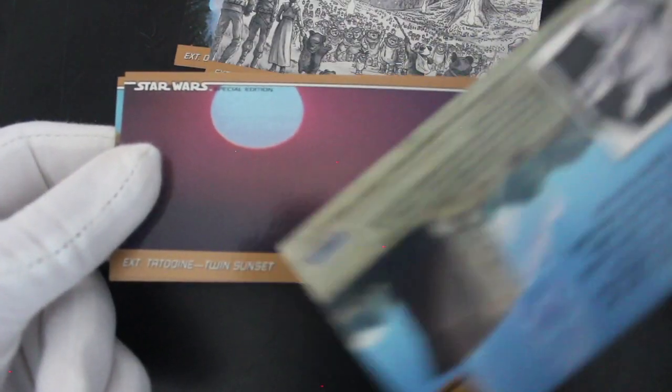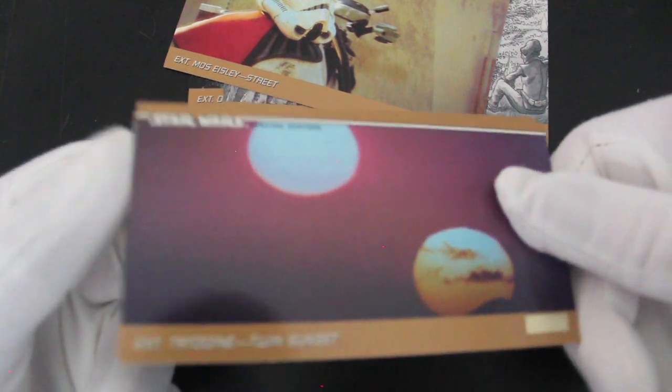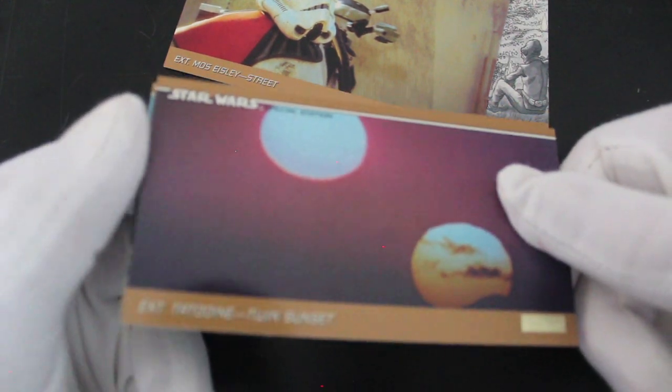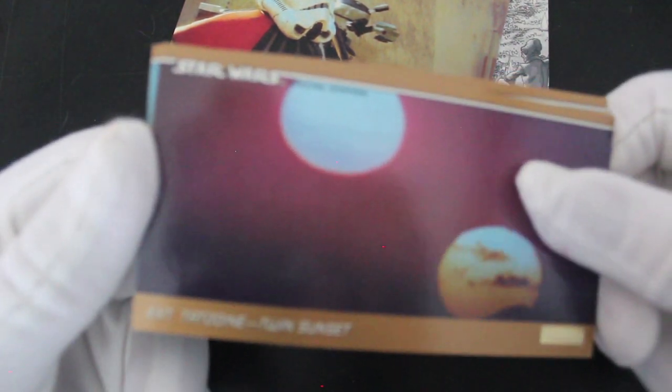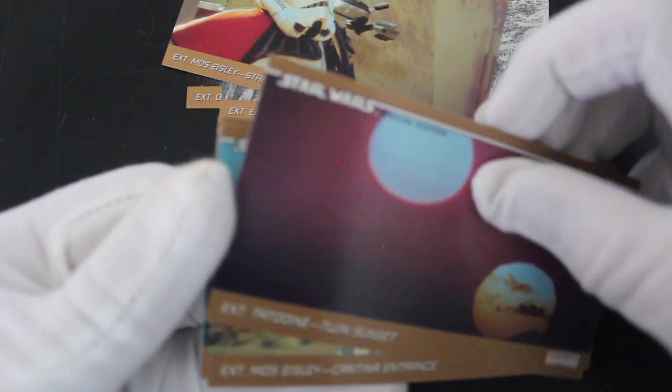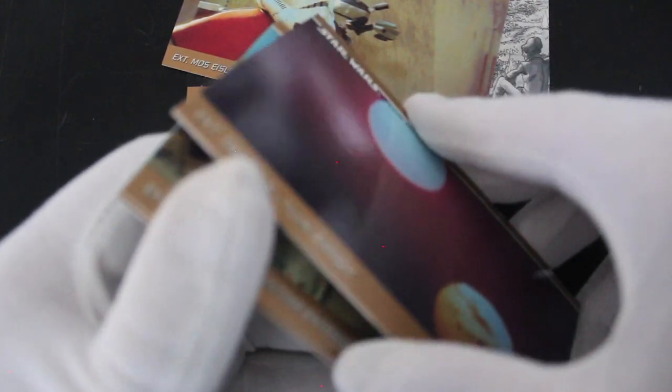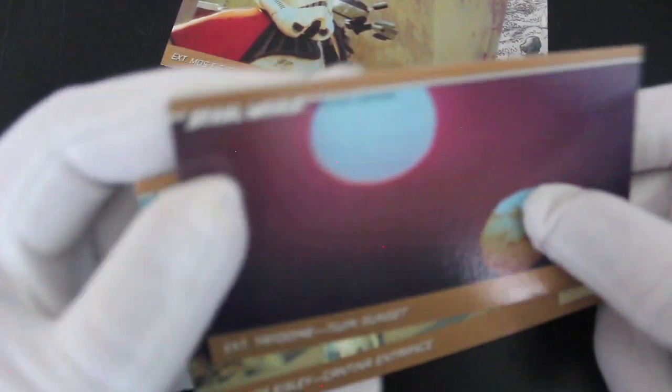Special edition, and you've got the twin suns of Tatooine, twin sunset. Come on, can't get these cards apart. We can do this, we can do it. Oh, we can't do it. I'll keep going, I'll try and get it.